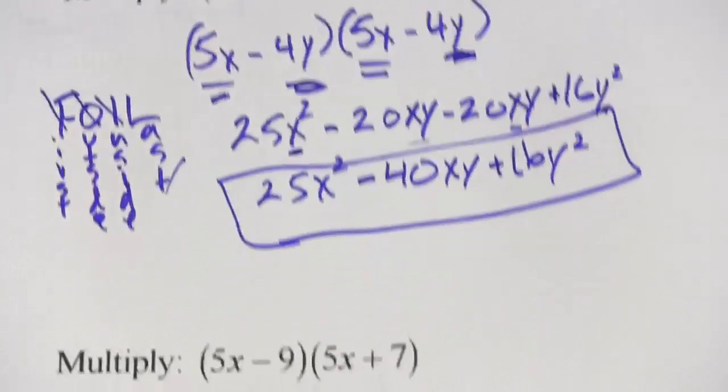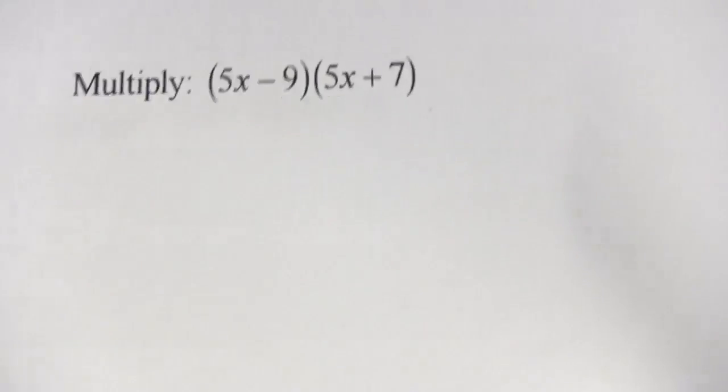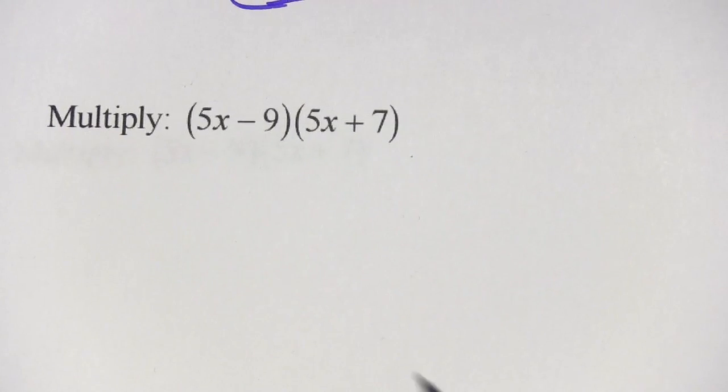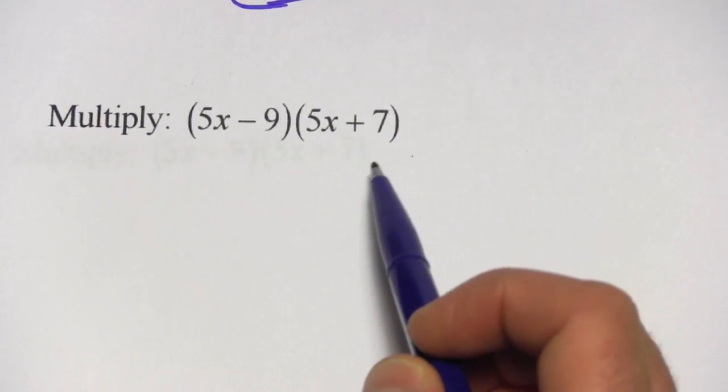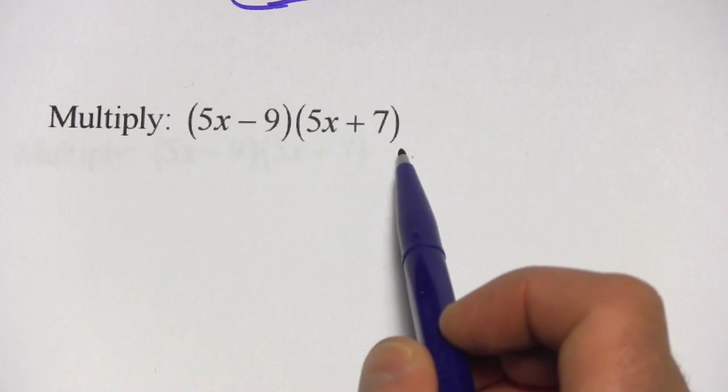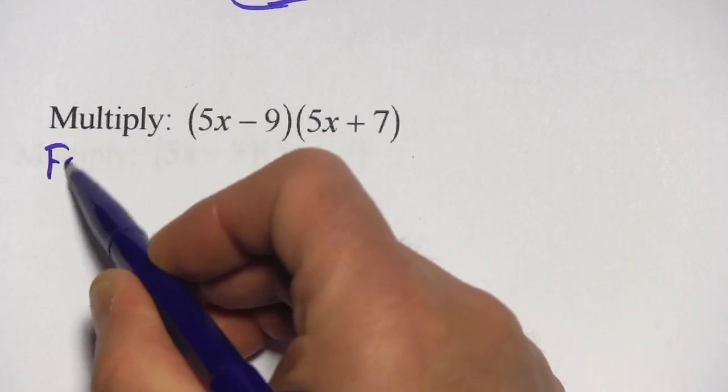Alright, let's try one more. So here is another problem. We have two different polynomials here, 5x minus 9 and 5x plus 7. We're going to do the same thing. We're going to foil it.